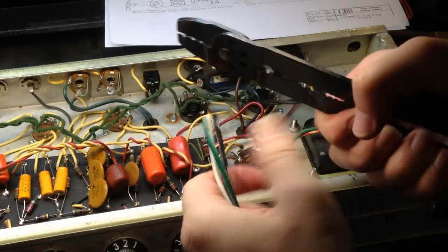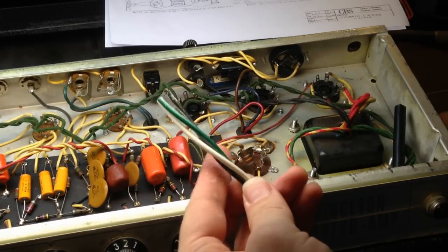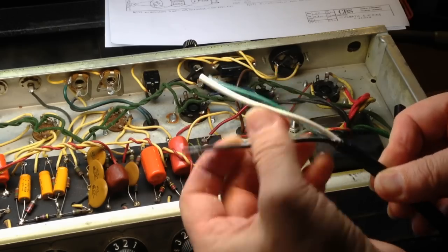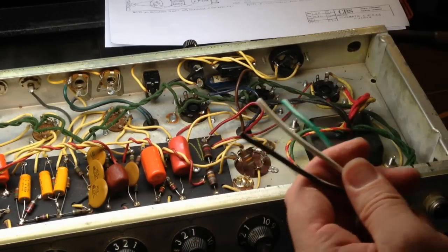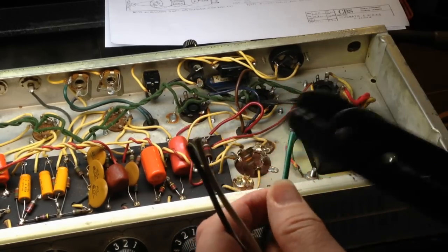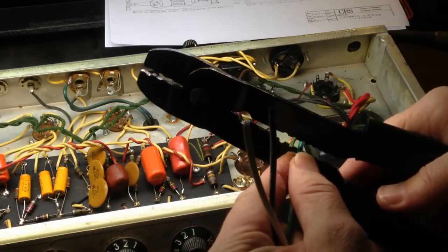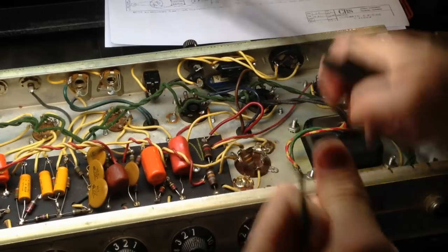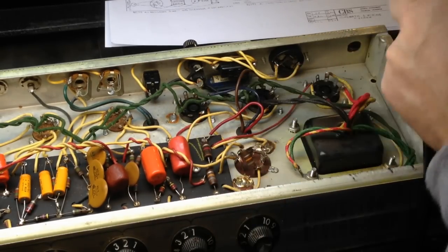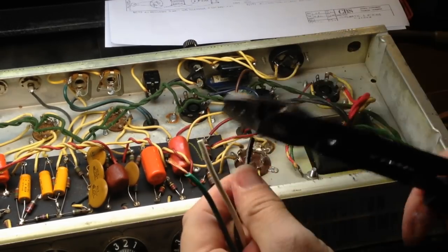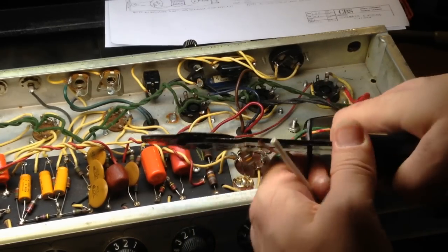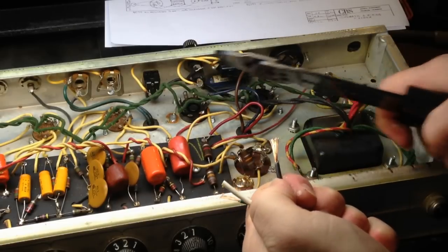Usually the good cords will have like a baby powder, talcum powder type substance in there. It makes it a lot easier to strip the wires off of there. And then of course you'll just come in, find the correct gauge on your wire stripper, and strip off the ends of the wires. Like so.